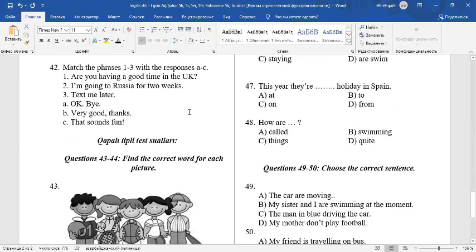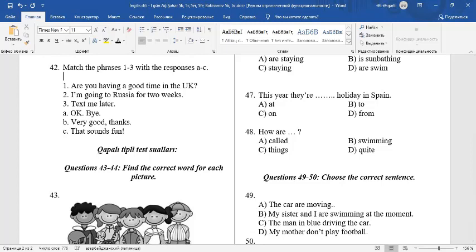42. Match the phrases 1, 2, 3 with the responses A to C. 1. Are you having a good time in the UK? B. Very good. Thanks. 2. I'm going to Russia for two weeks. C. That sounds fun. 3. Text me later. A. Okay. 1B, 2C, 3A.